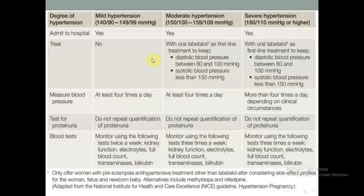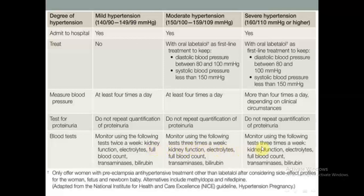This management table is important: mild preeclampsia requires admission; no treatment needed for mild hypertension; blood pressure measured every four hours; urine albumin tested once; blood tests twice per week. Moderate form: blood tests three times per week. Severe form: blood pressure monitored more frequently; blood tests three times per week or more according to circumstances. The drug of choice is labetalol.